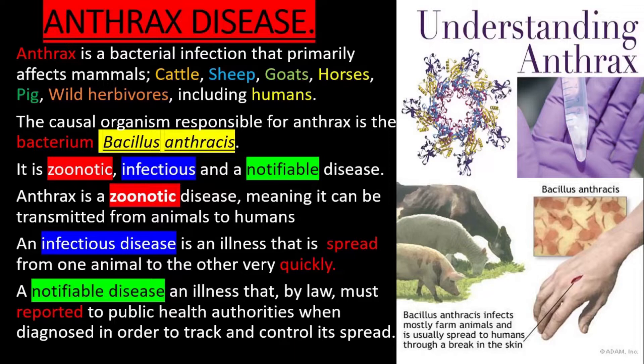Anthrax is a zoonotic disease, meaning it can be transmitted from animals to humans. An infectious disease is an illness that is spread from one animal to the other very quickly. A notifiable disease is an illness that, by law, must be reported to public health authorities when diagnosed in order to track and control its spread.